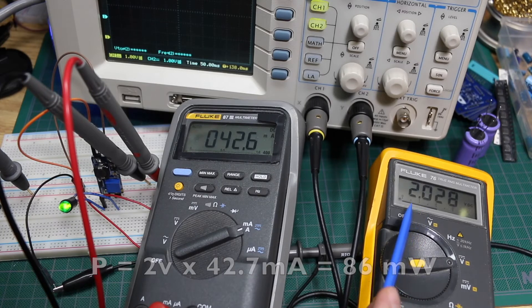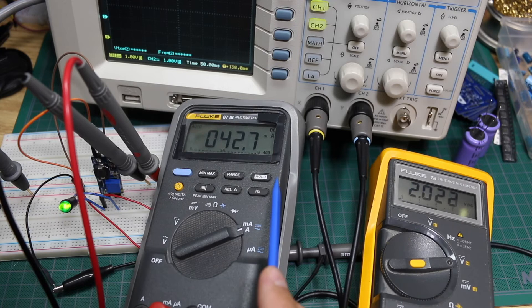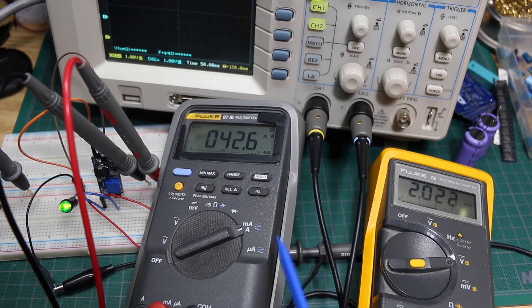So on average, the input power at these varying voltages and currents is 85 milliwatts. And the output power for 5 volts at 14.75 milliamps is about 74 milliwatts.